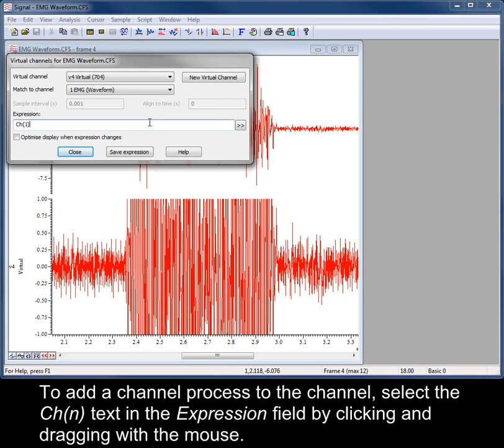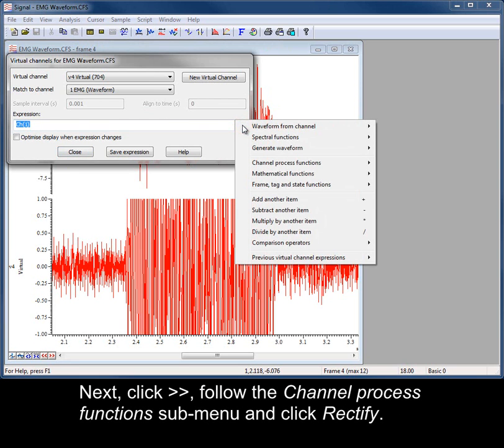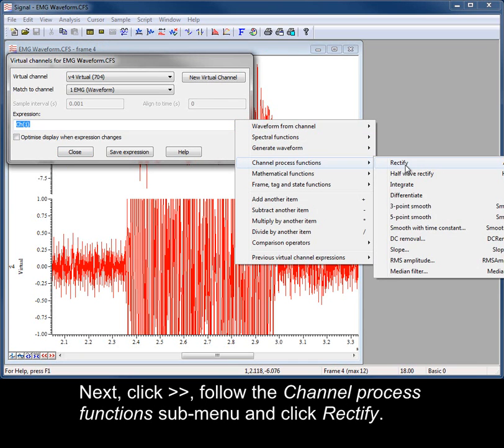To add a channel process to the channel, select the channel expression text in the expression field by clicking and dragging with the mouse. Next, open the expression menu, follow the channel process function submenu and click Rectify.